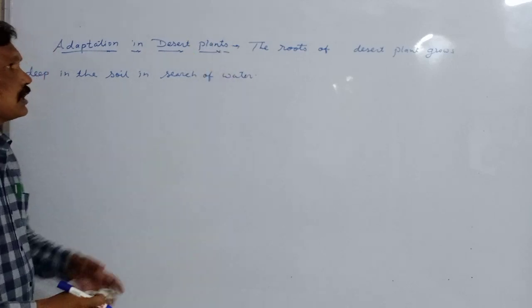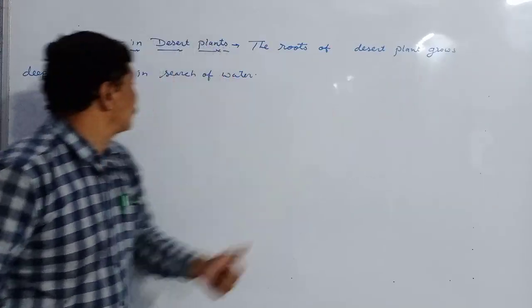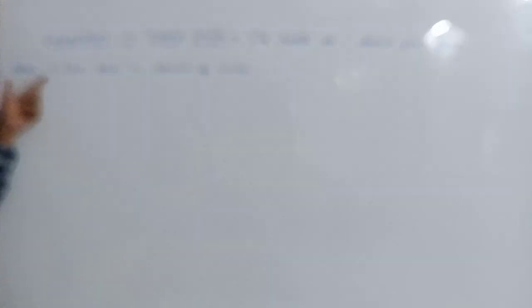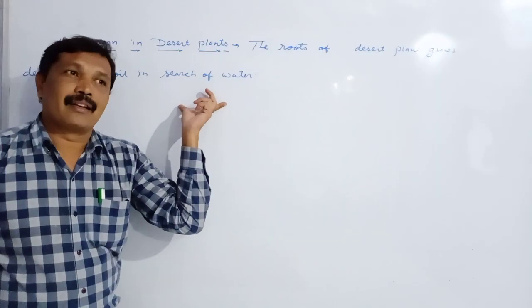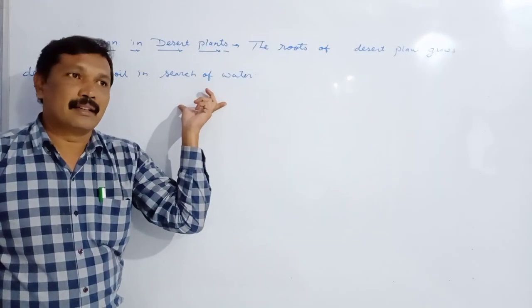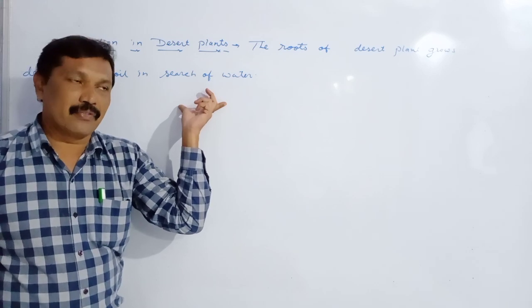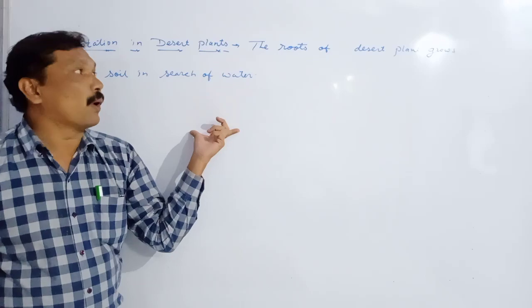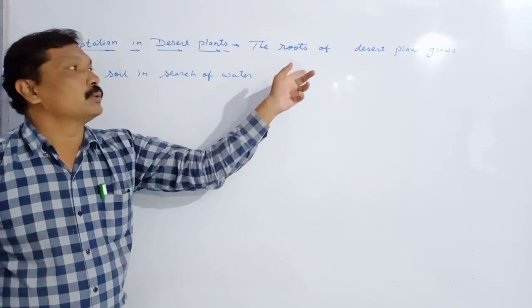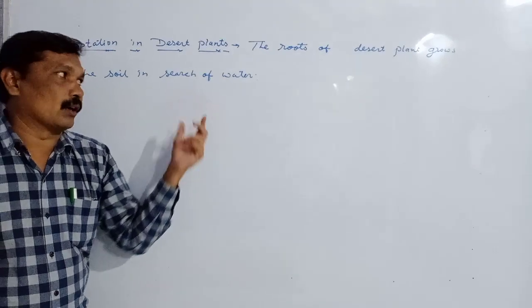The roots of desert plants grow deep in the soil in search of water. In the desert, there is scarcity of water. And therefore, to adjust to the surrounding, the roots of the desert plant grow deep into the soil in search of water.